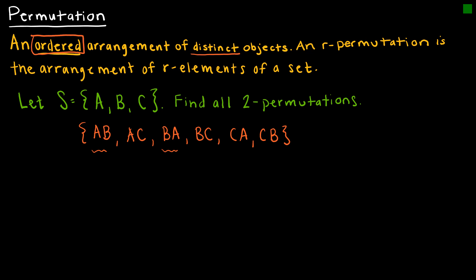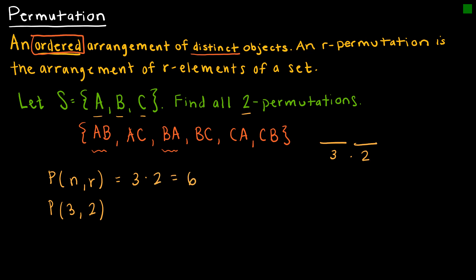That's easy for a small set, but what if I wanted to do it for a much larger set? Then we're going to start using a formula. Looking at the notation P(N, R): N represents the number of objects in the set, and R represents the number of objects chosen. I can reason through it and say there are three elements, so for the first position I have three choices, and for the second position I have two choices remaining — so 3 times 2 equals 6. It's nice to have a formula to just plug in values.